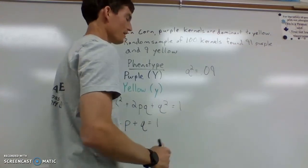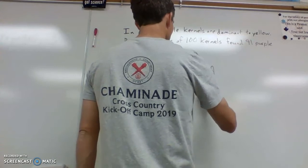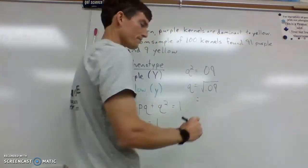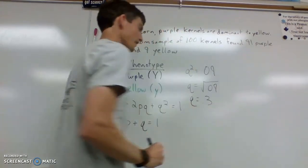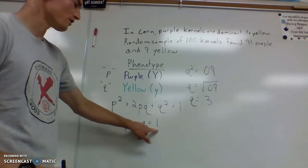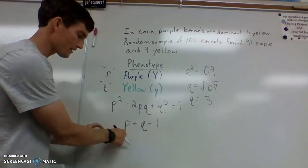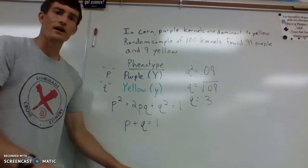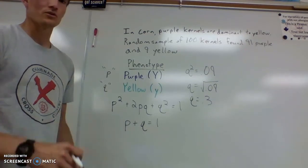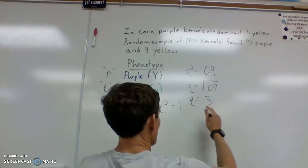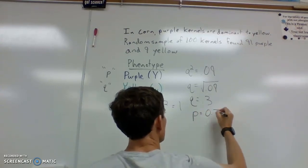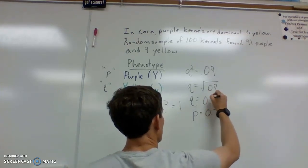One of the ways you can figure this out: we know that 9 out of 100 are going to be yellow, so q² is equal to 0.09. If q² equals 0.09, then we solve for q by taking the square root. The square root of q² is just q, and the square root of 0.09 is 0.3. So q equals 0.3. And since p + q = 1, that means p is equal to 0.7.